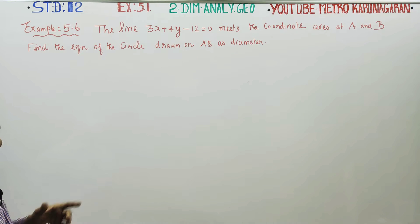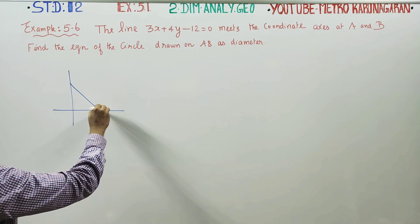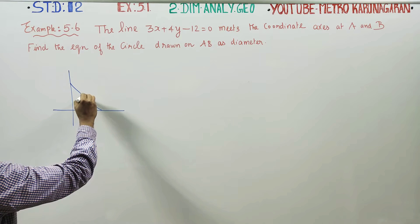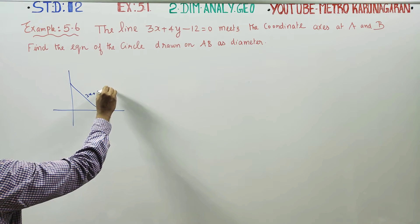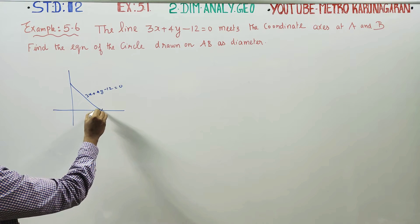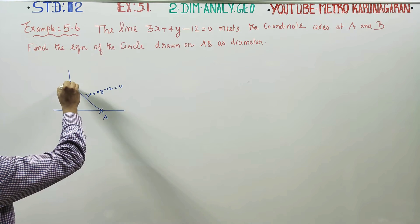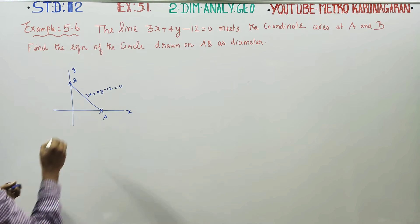The line 3x + 4y - 12 = 0 meets the coordinate axes at A and B. Find the equation of the circle drawn on AB as the diameter. This line meets the x-axis at A and the y-axis at B.